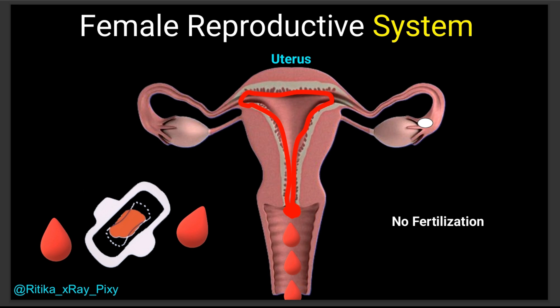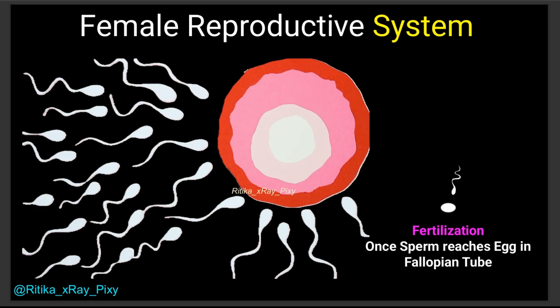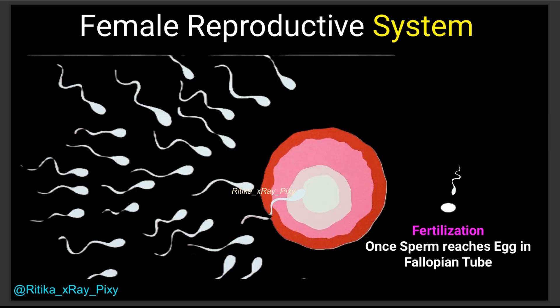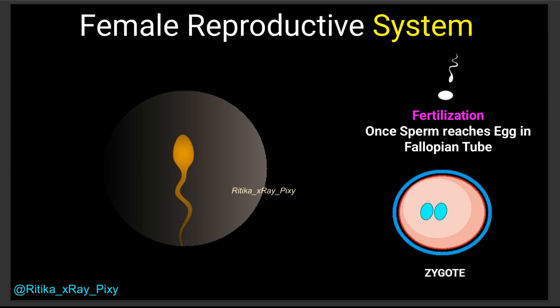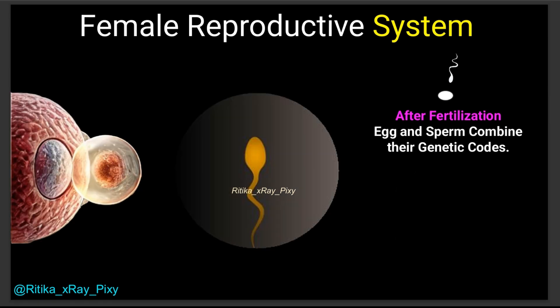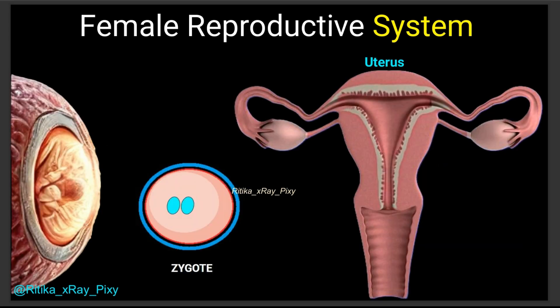Once the sperm reaches the egg in the fallopian tube, it tries to enter. The egg's outer layer is tough, but the sperm releases special enzymes to break through. Once the sperm gets in, the egg's membrane changes to make sure no other sperm can enter. This is when fertilization happens — the sperm and egg combine their genetic material to form a single cell called a zygote.